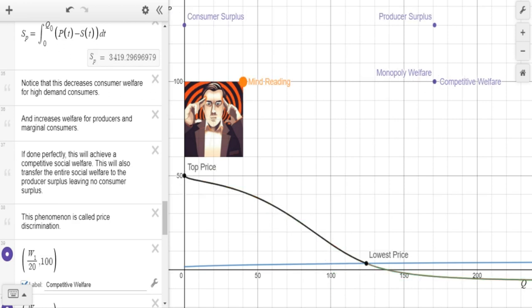Now, if we can do this perfectly, this will achieve a competitive social welfare. This will also transfer the entire social welfare to the producer, leaving no consumer surplus. This is technically efficient. This is because we are charging everyone their exact willingness to pay, so there is no loss in revenue by adding the marginal consumer. This phenomena is called price discrimination.